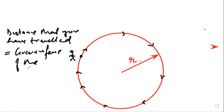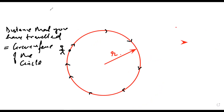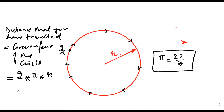Mr. Sarthak, any doubt? No, sir. Now there's a formula for the circumference of a circle — you can note it down and you will have to memorize it. It is equal to 2 into π into r. The value of π is usually taken as 22 by 7, and therefore this formula becomes 2 into 22 by 7 into r. Please note it down.